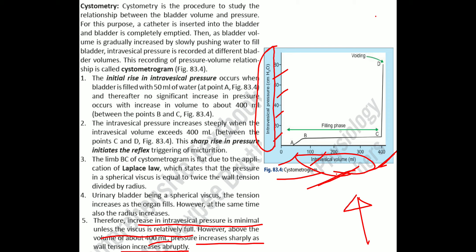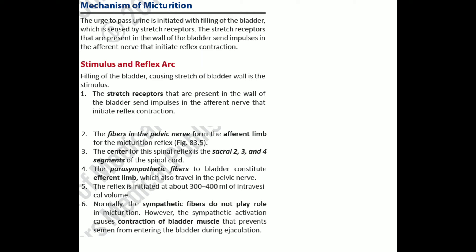Pressure is constant from 100 to 400 ml. Once it enters the 400 ml zone, there is an abrupt, sharp rise that triggers the micturition reflex. The urge to pass urine is initiated by bladder filling, sensed by stretch receptors on the bladder wall, which send afferent signals initiating reflex contraction.